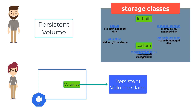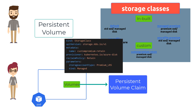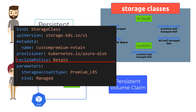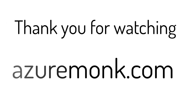For example, you can have a custom premium-retain storage class, which has a reclaim policy of retain, but where the backend storage is still a premium SSD-based managed disk. I hope you found this video useful. Thank you for watching — I'll see you again in the next video.